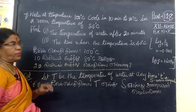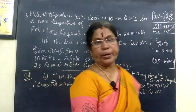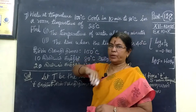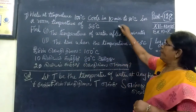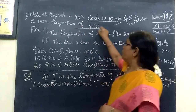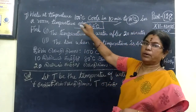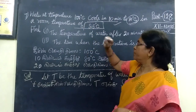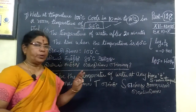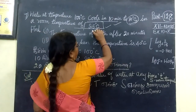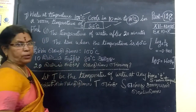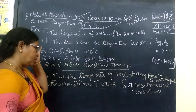Next question is number 7. Water at temperature 100 degrees Celsius cools in 10 minutes to 80 degrees Celsius. The room temperature is given. We consider room temperature, then we minus the two — the high temperature 100 degrees minus the room temperature. This is called Newton's Law of Cooling.